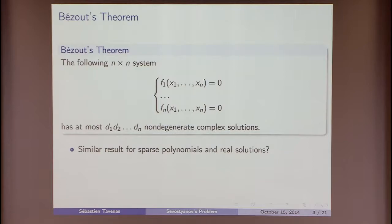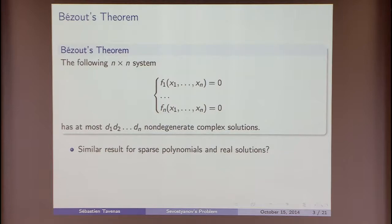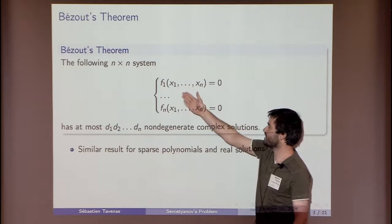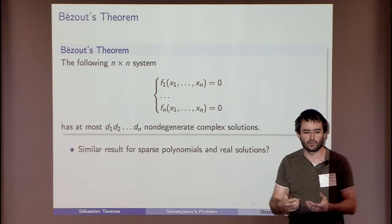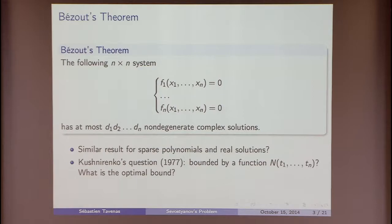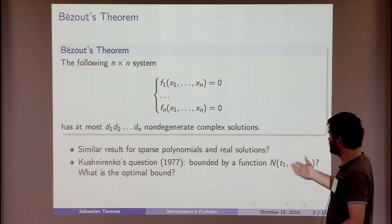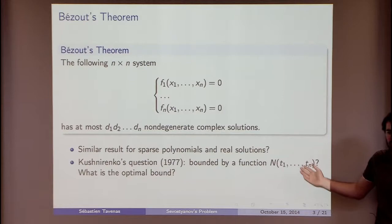Is it possible to do something similar for real roots and sparse systems? If we have a system such that f1 is t1-sparse, ..., fn is tn-sparse, is it possible to count the number of real solutions? This question was asked by Kushnirenko et al. in 1977: is there a function depending only on t1,...,tn which bounds the number of roots?